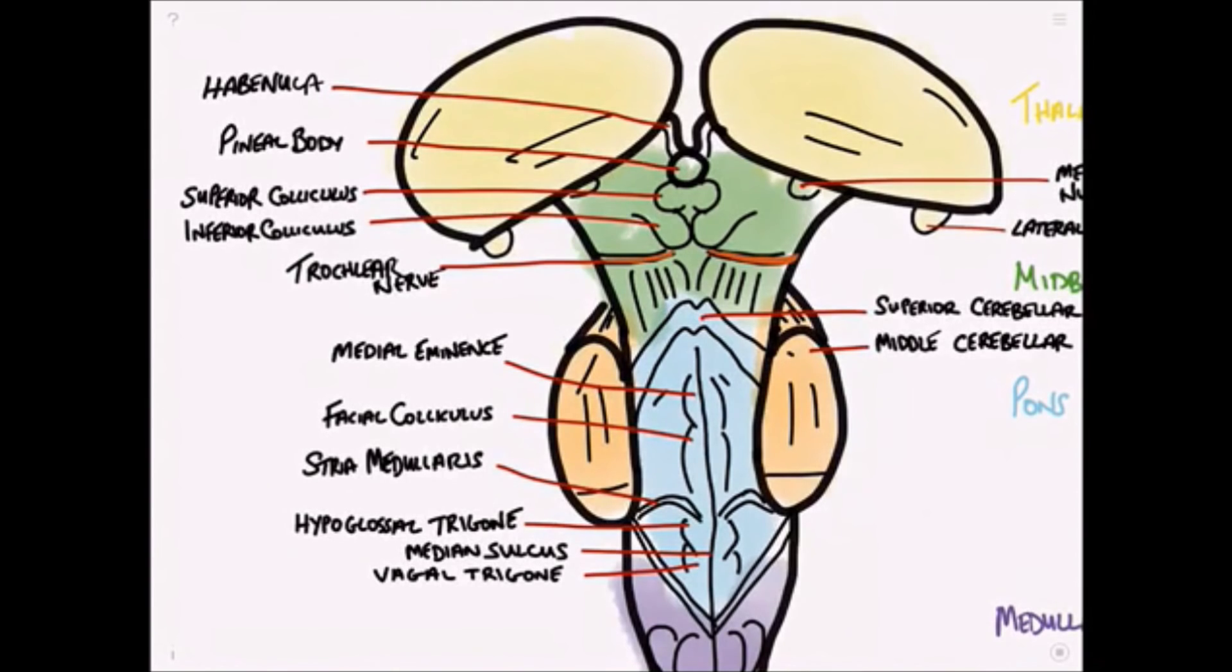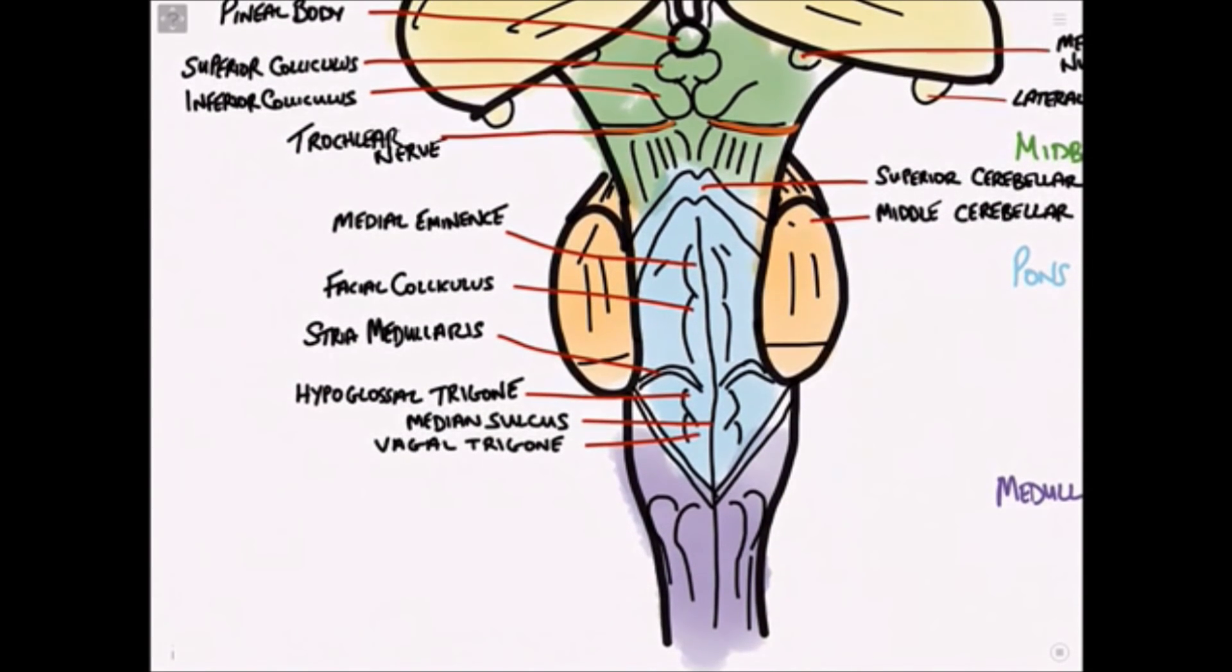Let's just reorientate here and we can label this structure. This is the cuneate tubercle and more medially we have the gracile tubercle.